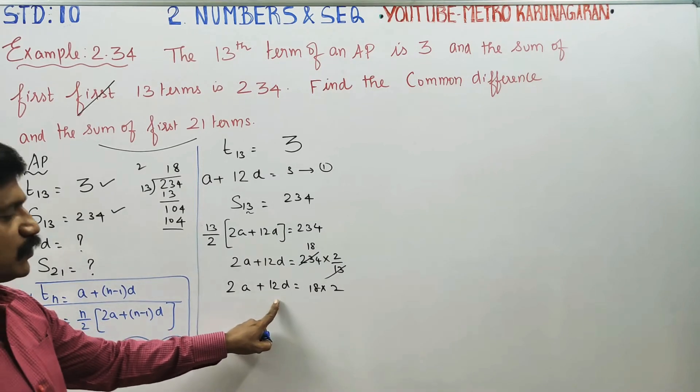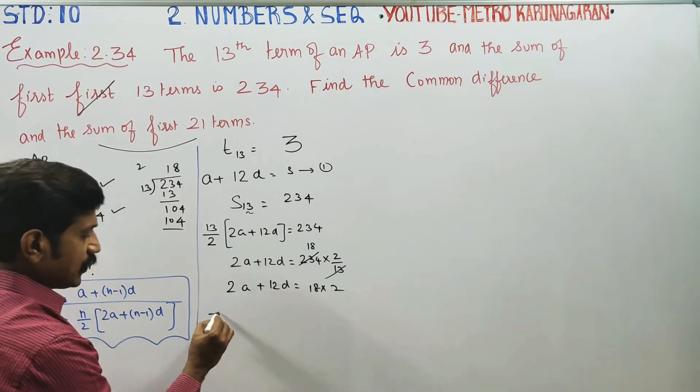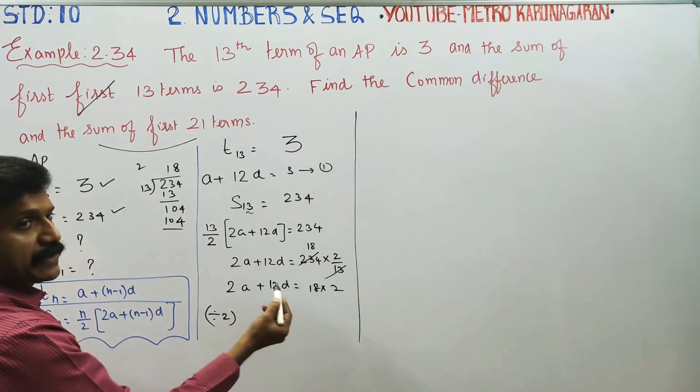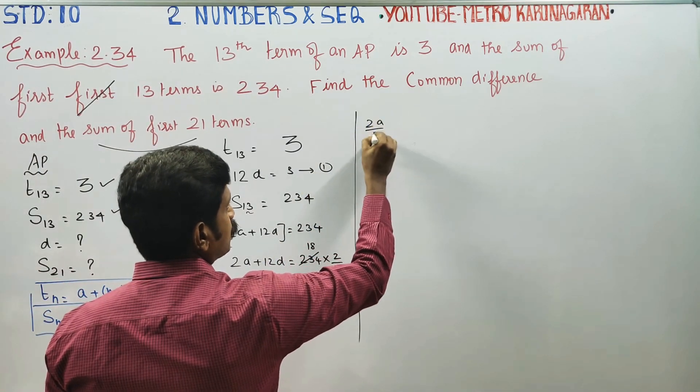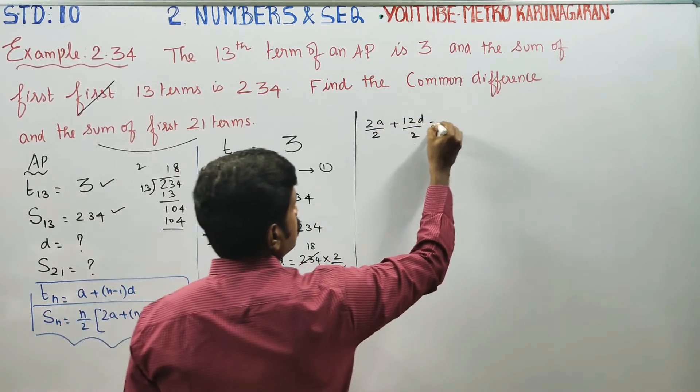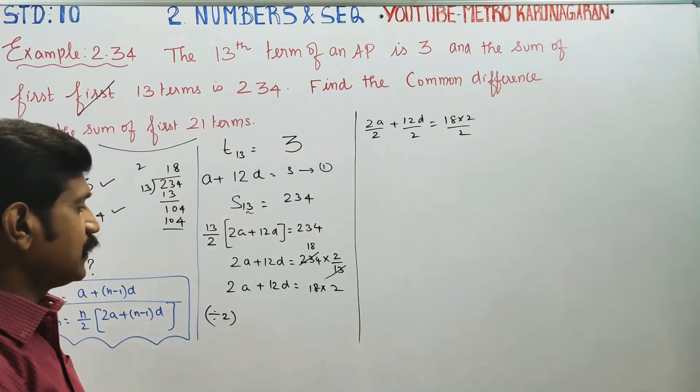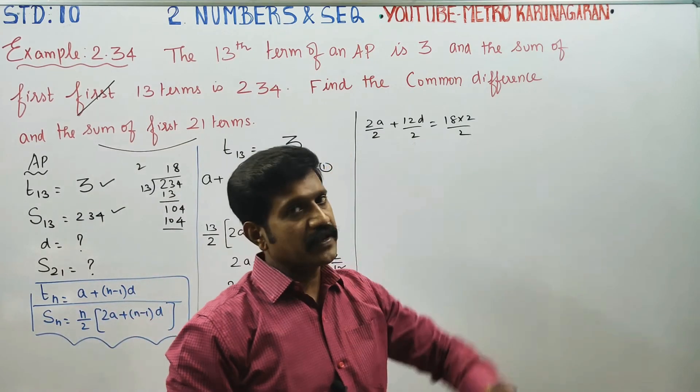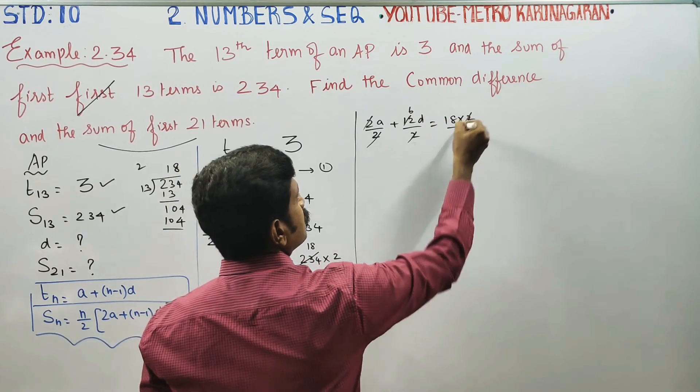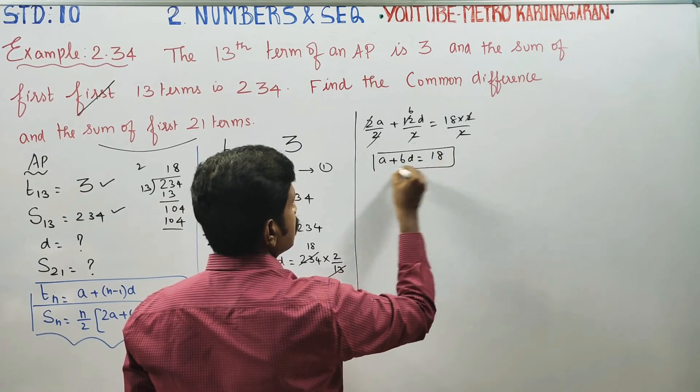Divide both sides by 2: 2A by 2 plus 12D by 2 equals 18. Simplifying: A plus 6D equals 18. This is the second equation.